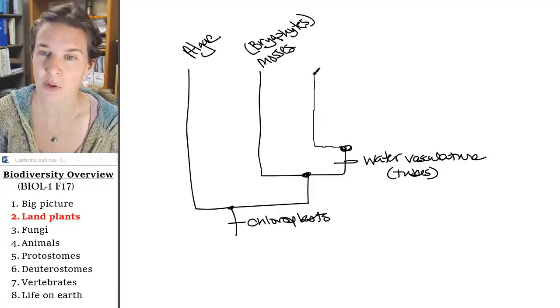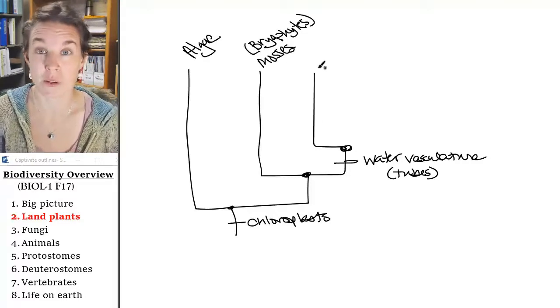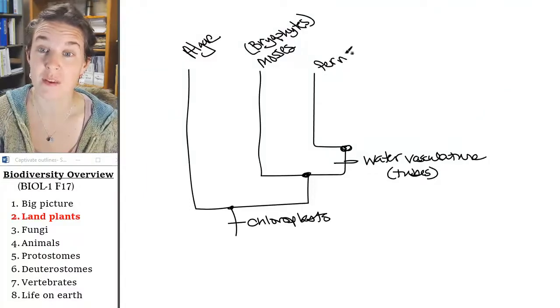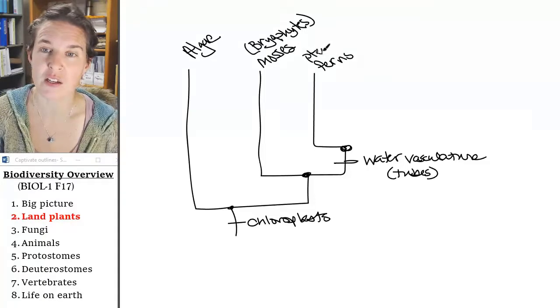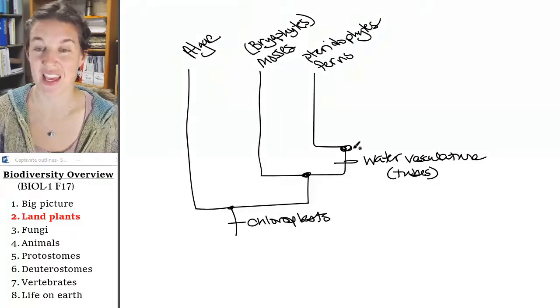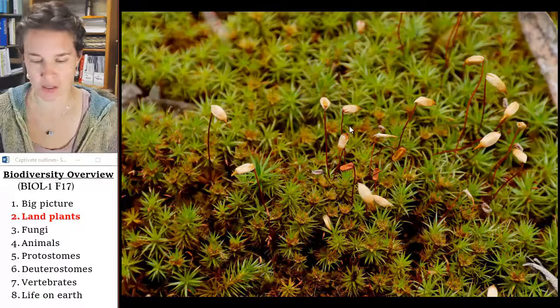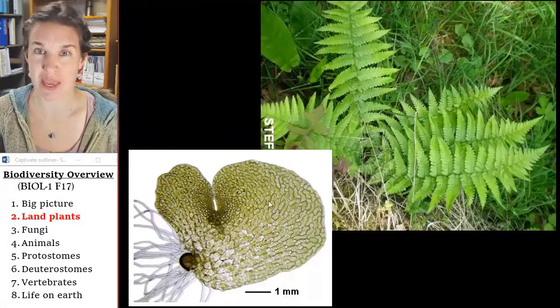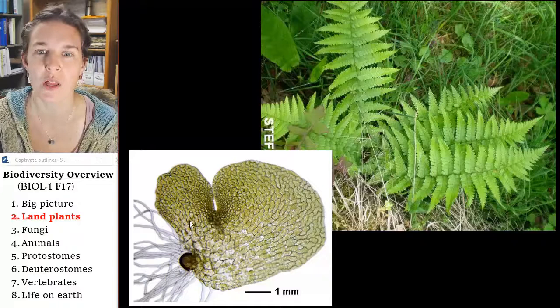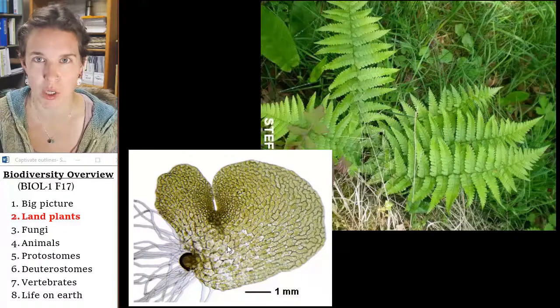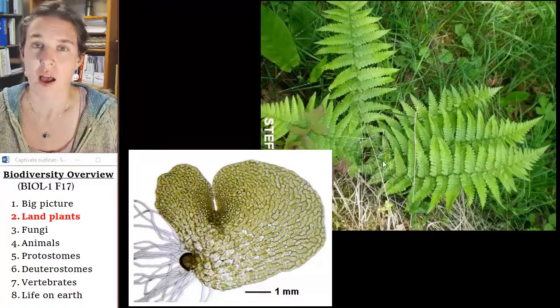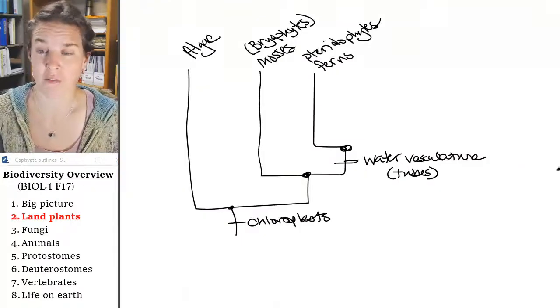And the first group of critters that has this water vasculature trait are ferns, and these guys are also called pteridophytes. So ferns, let's take a look at a fern. Familiar. This is actually a baby fern. Plant life cycles, I had to skip it because we don't have enough time to talk about it, but it's so cool. This is like a haploid. It's like a sperm. It's like a grown-up sperm that is walking around, and it gives rise to this other plant. It's super cool. I wish we could talk about it, but we can't. So pteridophytes, they've got water vasculature tubes.